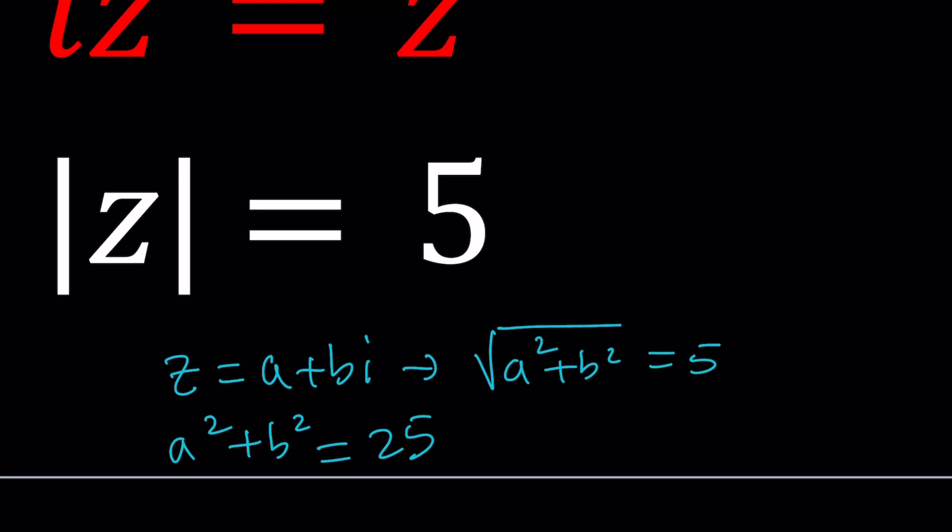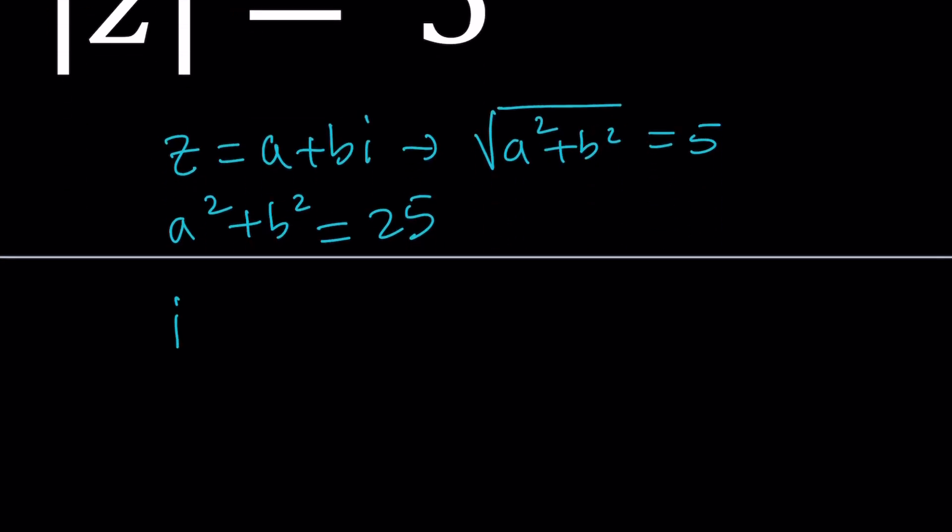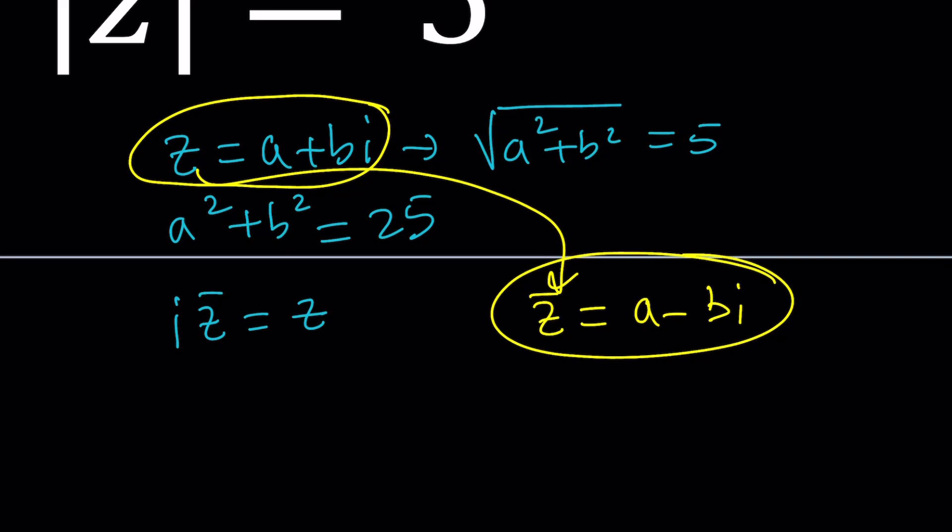Now, if you plug everything into the first equation, which is iz bar equals z, then you get the following. What is z bar? Z bar is the complex conjugate. So if z is a plus bi, z bar can be written as a minus bi. To find the complex conjugate of a number, you just change the imaginary part. You negate the imaginary part. Nothing happens to the real part. By definition, if you multiply a complex number and its conjugate, their product and sum are both real numbers. And that's the only unique pair that satisfy this property.